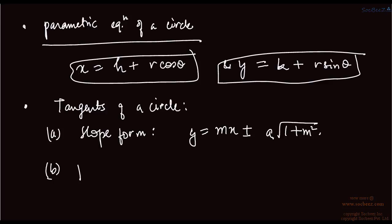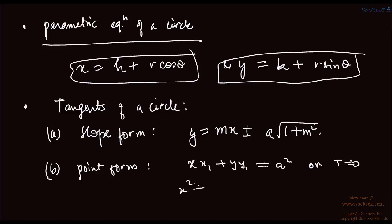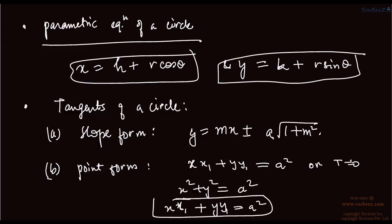The second form is point form. Point form is xx1 plus yy1 equals a squared, or T equals 0. This equation can be written as x squared plus y squared equals a squared, so x squared changes to xx1 and y squared changes to yy1 equals a squared. This is the form of tangent, T equals 0.